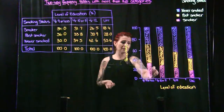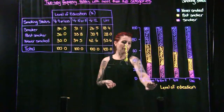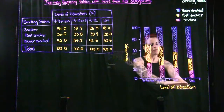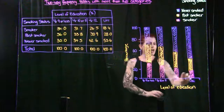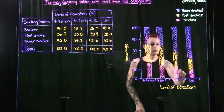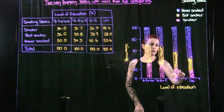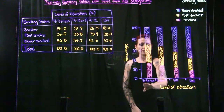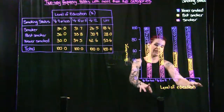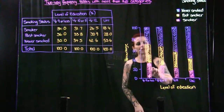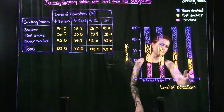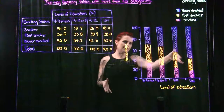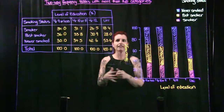We can also see that trend with smokers — as your level of education decreases, the likelihood of being a smoker increases. Or alternatively, as your level of education increases, the likelihood of being a smoker decreases. You can see that really clearly in the graph with those different patterns.